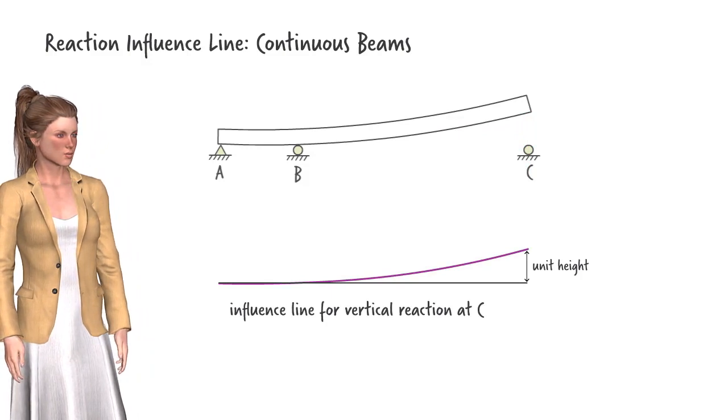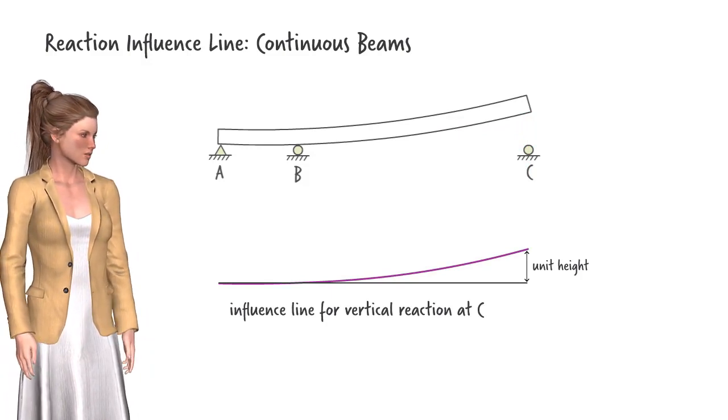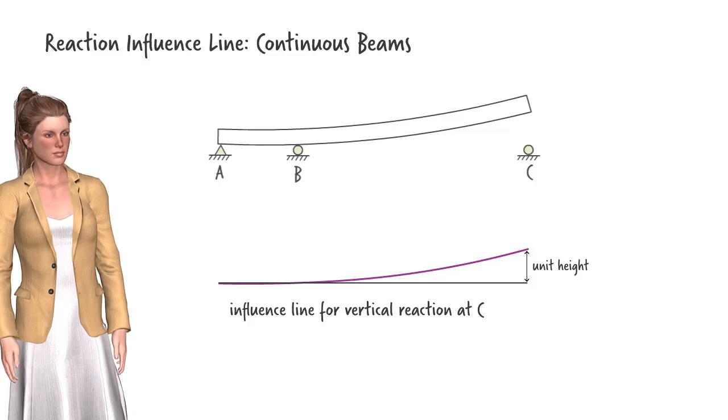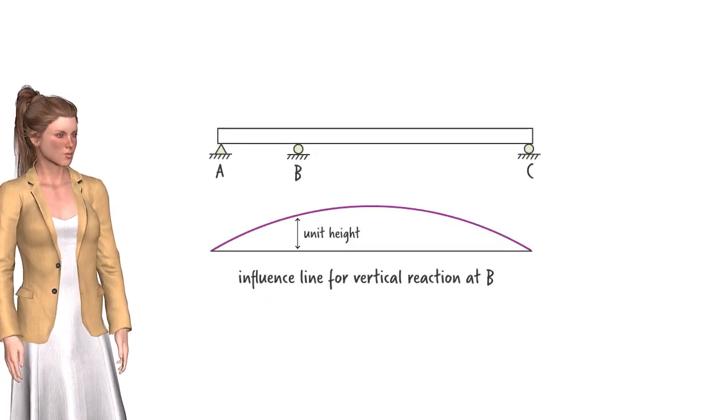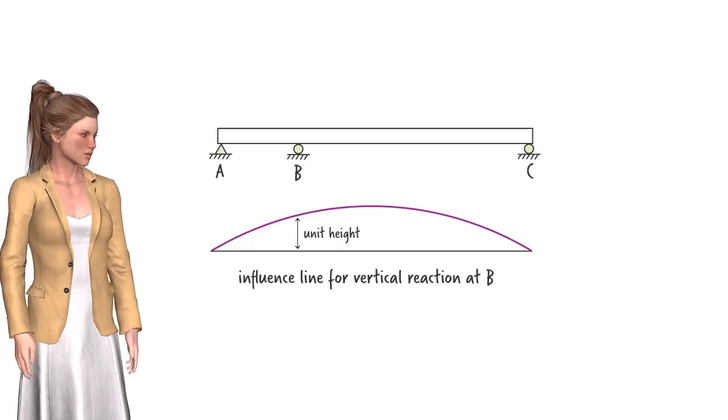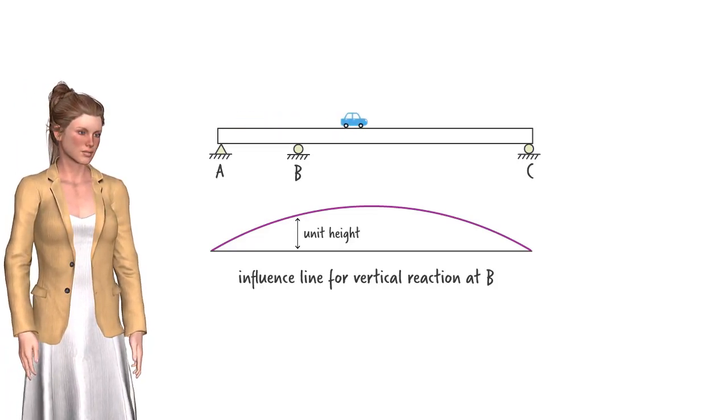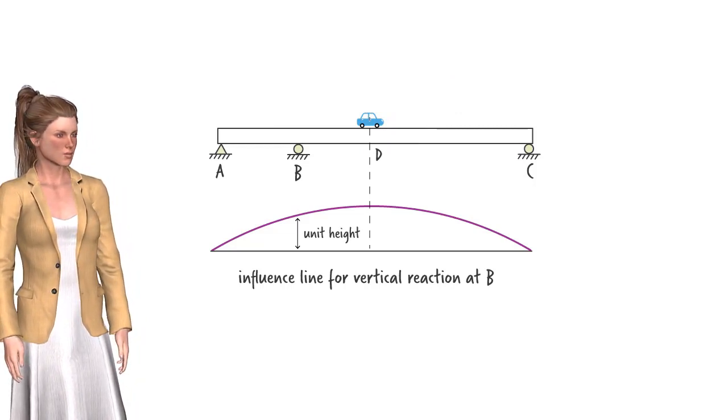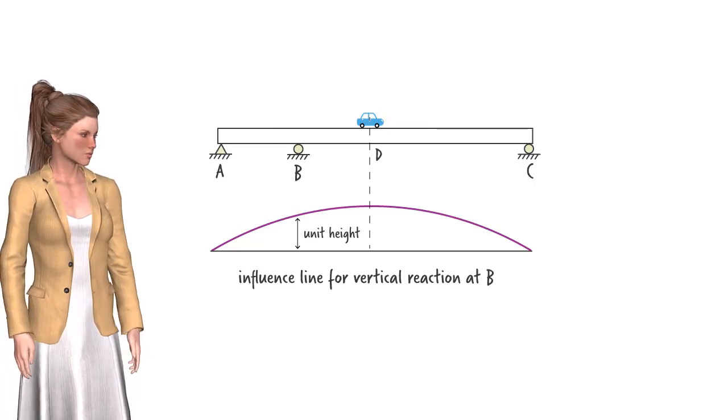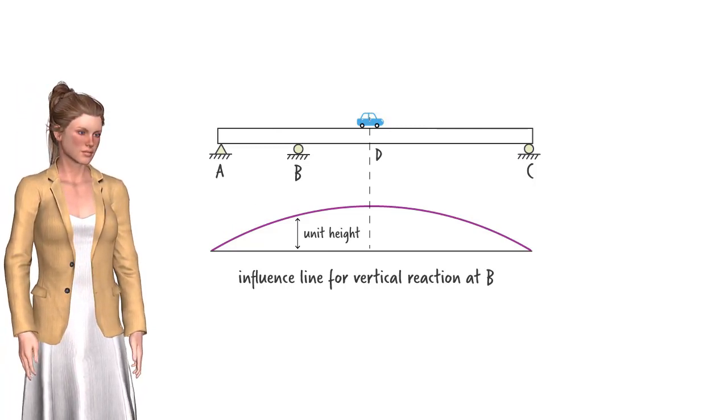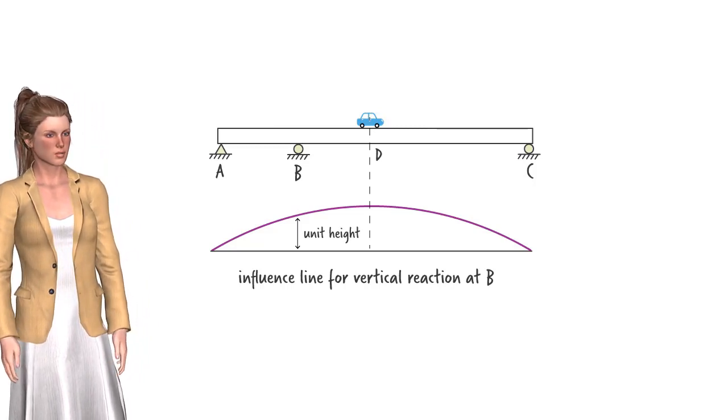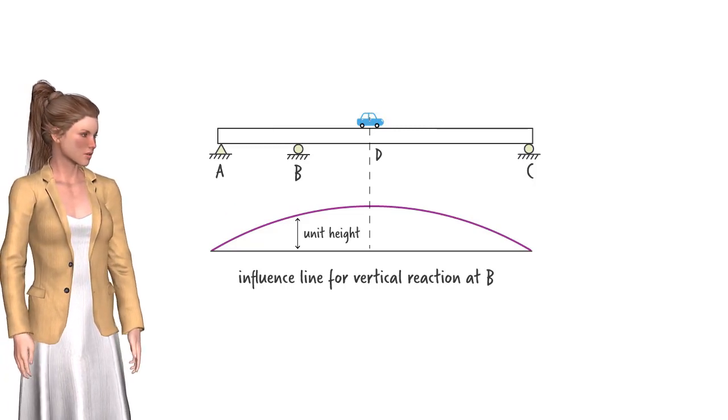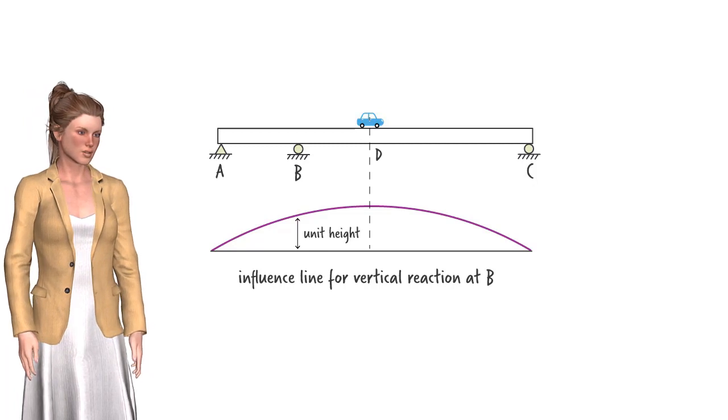These qualitatively constructed diagrams, however, are of limited use for analyzing the effect of moving concentrated loads on the beam. Let's see why that is the case. Suppose we wish to determine the maximum reaction force at B due to a moving load. The influence line shows that the maximum reaction at B develops when the load is positioned at D. But where is the exact location of point D? The qualitatively drawn diagram does not give us that information. To locate D, we need to derive the mathematical equation for the diagram. But how do we write the mathematical expression for a reaction influence line?